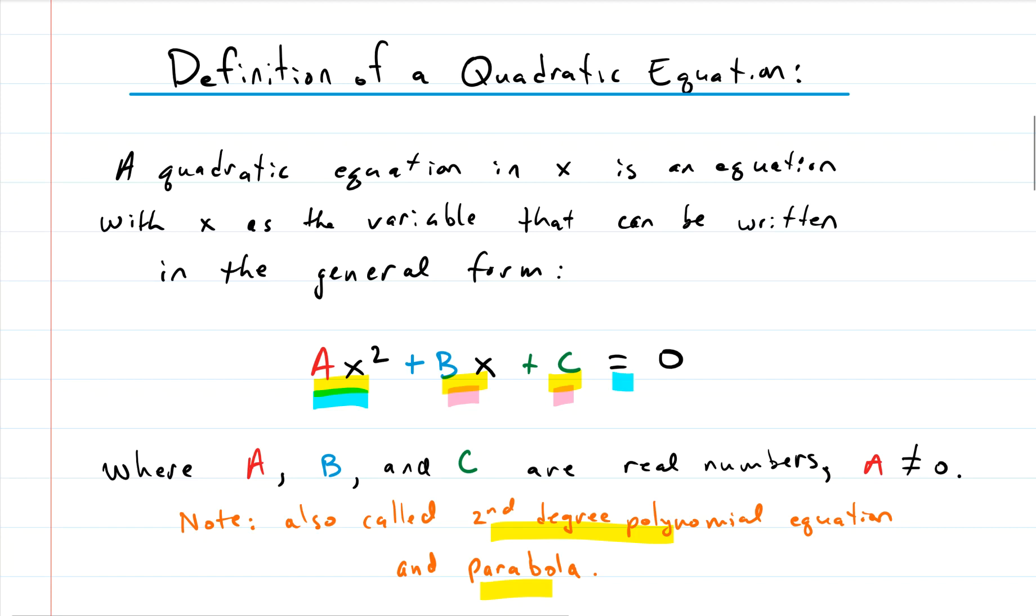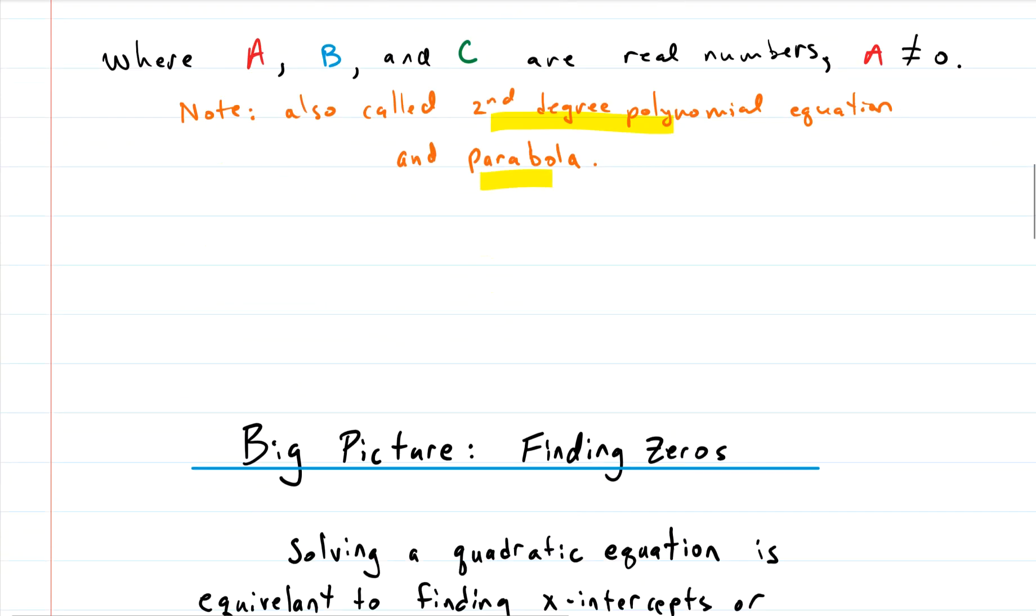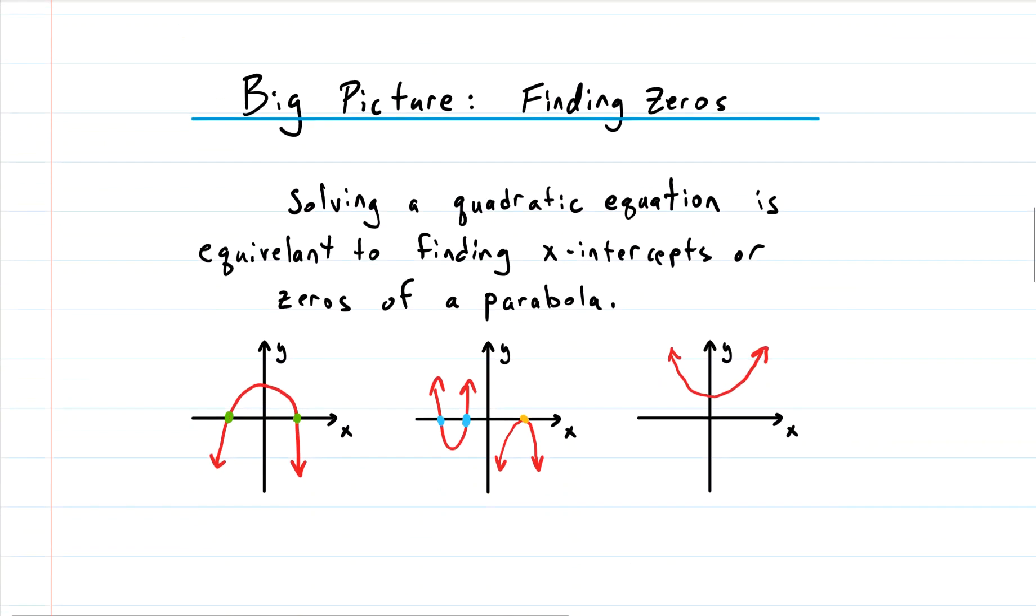That's a quadratic equation. Oh, you need the equal sign or it's not an equation. Solving quadratic equations: the big picture is you're just finding x-intercepts. Often they call them zeros, but really you're just finding x-intercepts, where does your parabola cross the x-axis.